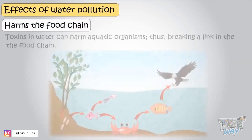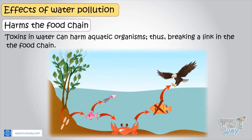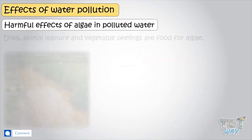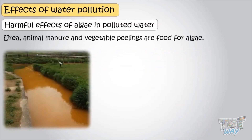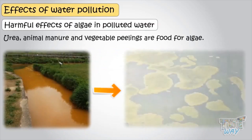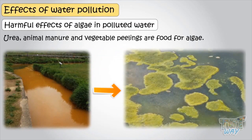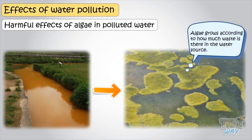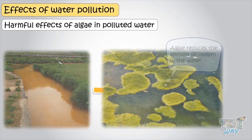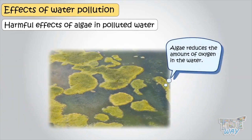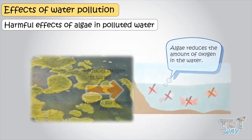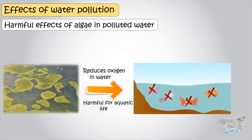Toxins within water can harm aquatic organisms, thus breaking a link in the food chain. Urea, animal manure, and vegetable peelings are food for algae, and polluted water has all these things. So algae grows according to how much waste is in the water source, and algae reduces the amount of oxygen in the water. This decreased oxygen causes harm to other organisms living in the water.